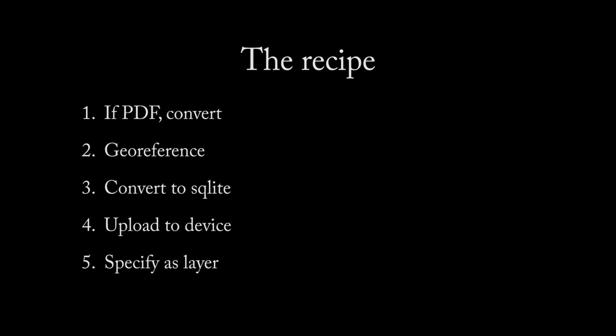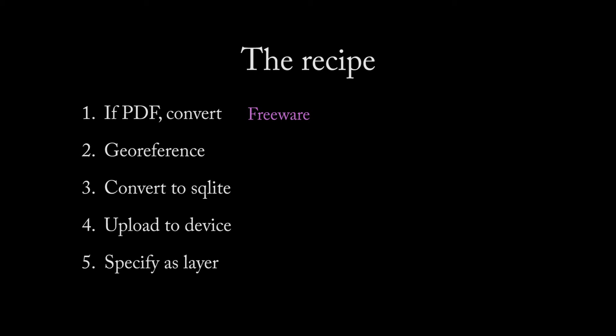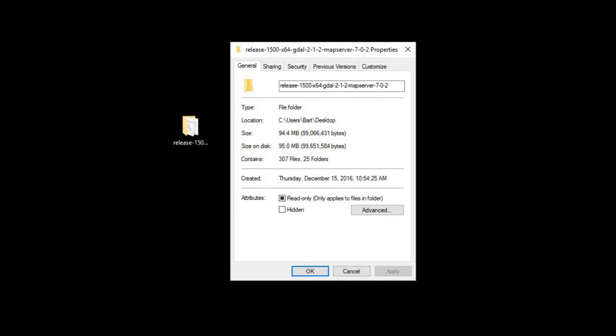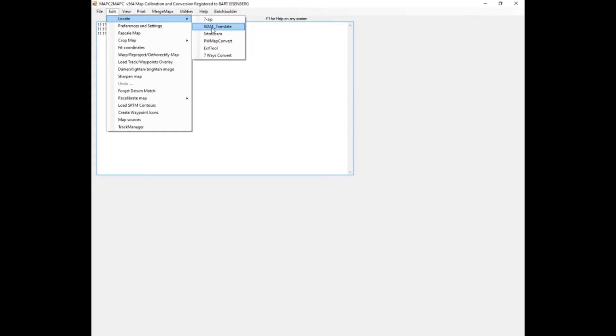Depending on the format of your map, there are usually four or five steps involved in putting a raster map on OsmAnd. If the original map is a PDF, you first convert it to a JPEG or other format that can be read by MapC to MapC. You then geo-reference the image, meaning you associate the pixels of the image with geographical coordinates. Some online maps are already geo-referenced — if that's the case, you may be able to skip the first two steps. You then convert the calibrated image into a format that can be read by OsmAnd, put the map on your device, and finally specify the map in OsmAnd as an additional layer. We also need one other piece of software: the Geospatial Data Abstraction Library, or GDAL, an open source translator library for raster and vector mapping data. MapC to MapC uses it.